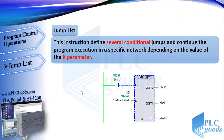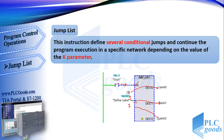Let's see the next instruction: jump list. This instruction defines several conditional jumps and continues the program execution in a specific network depending on the value of the K parameter. The destination network must be identified by a label. At this program, first we need to activate the start contact. Now the K parameter value is zero, so the program jumps to the destination network with label zero. If the K parameter value was one or two, the program jumps to the network with label one or label two. We can increase the network destination up to 32.